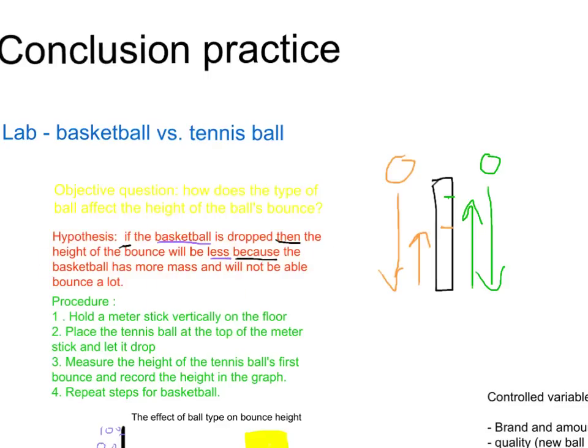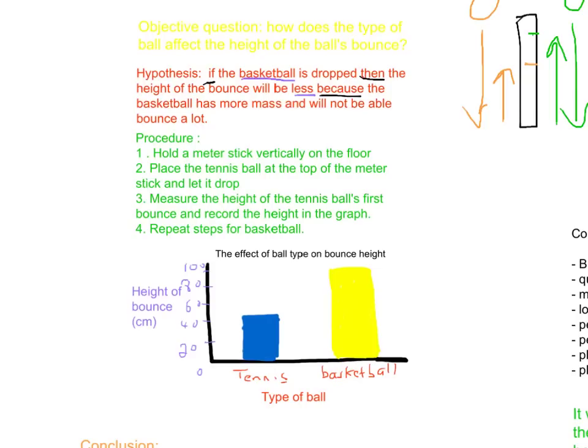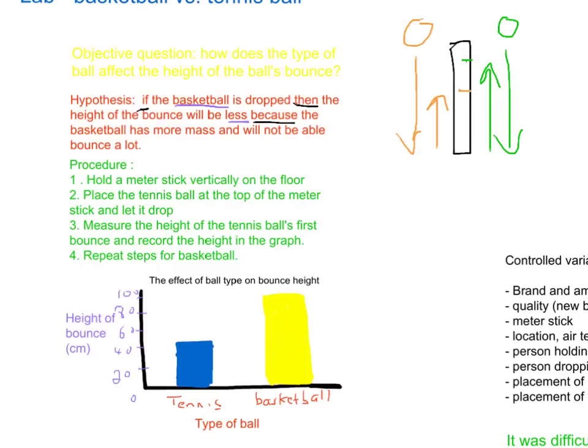Here's the procedure and the graph, also taken right from your handout. The procedure says: hold a meter stick vertically on the floor, place a tennis ball at the top of the meter stick, let it drop, measure the height of that bounce, and record it in the graph. Then take the basketball, place it at the top of the meter stick, drop it, let it bounce, and record that height. That is our procedure.